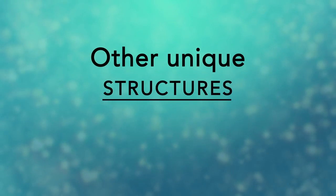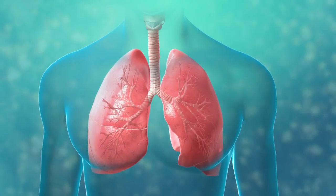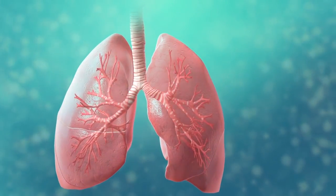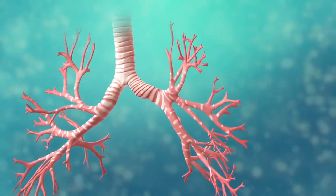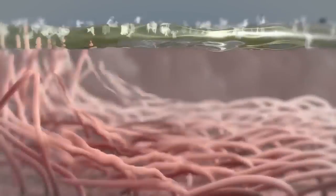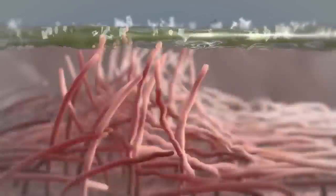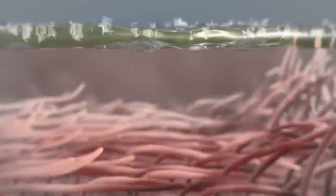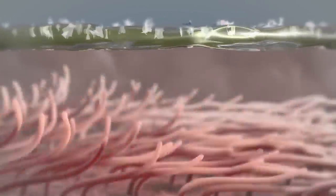There are many other unique structures that only some cells have. Here are just a few. In humans, for example, the respiratory tract is lined with cells that have cilia. These are microscopic hair-like projections that can move in waves. This feature helps trap inhaled particles in the air and expels them when you cough.